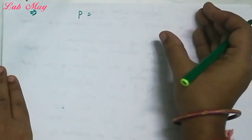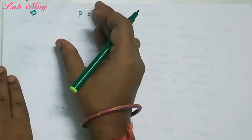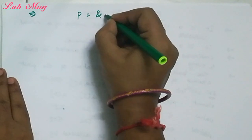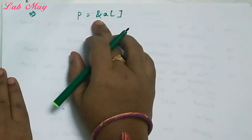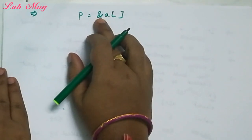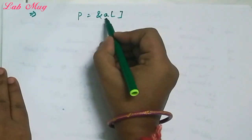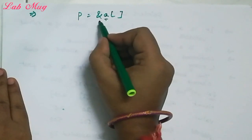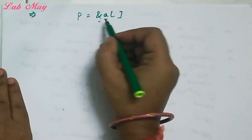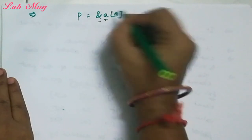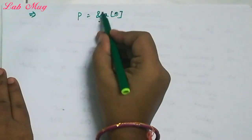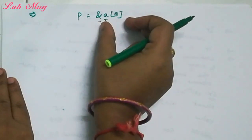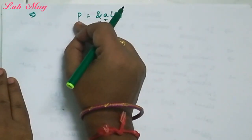We store the array elements' addresses into pointer variable 'p'. We do this using the ampersand operator: p = &a[0]. The ampersand represents the address of a variable. So p = &a[0] means we store the address of a[0] into p.